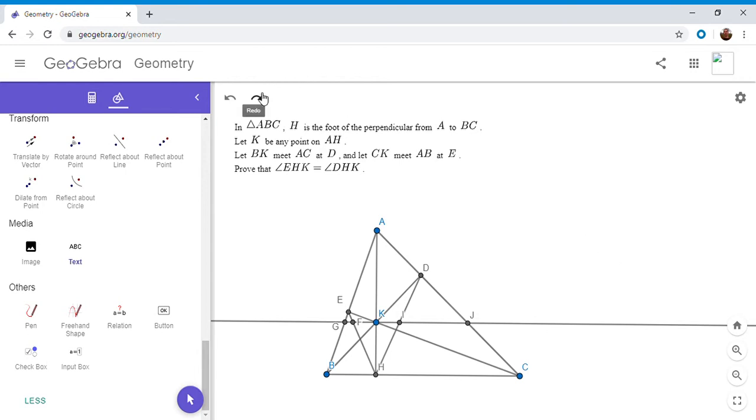So we have a lot of similar triangles now with this parallel line through K. And my ultimate goal is I want to show that EHK equals DHK, which is the same as showing FHK is IHK. So if we can show that FK equals IK, that would solve the problem. With all these similar triangles, that looks like it might be plausible.